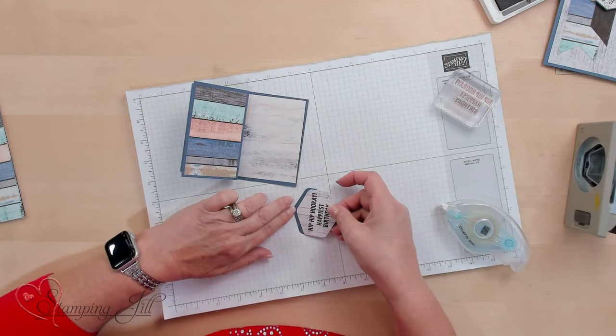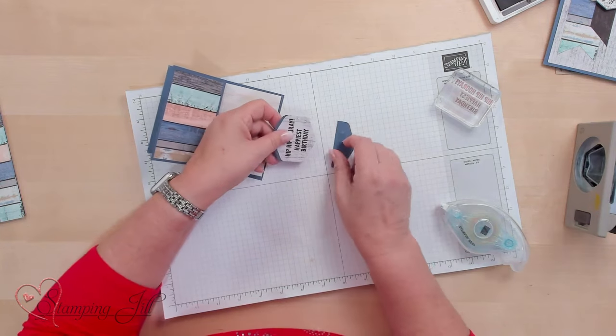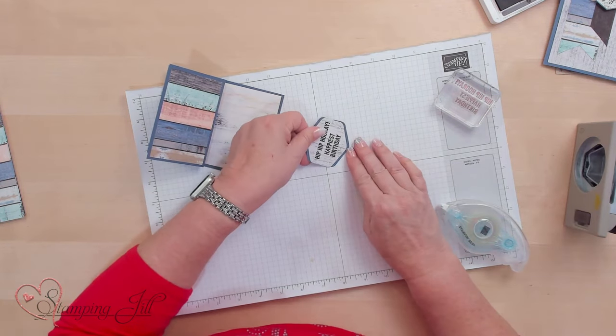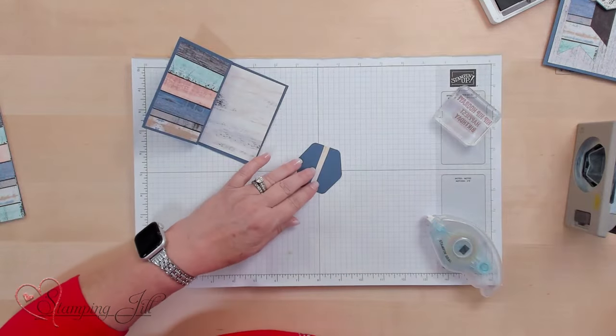So I'm just going to put this about a quarter of an inch down. And I'll do the other side the same way. Quarter of an inch down and try to do the sides just straight. Then we're going to pop that up.